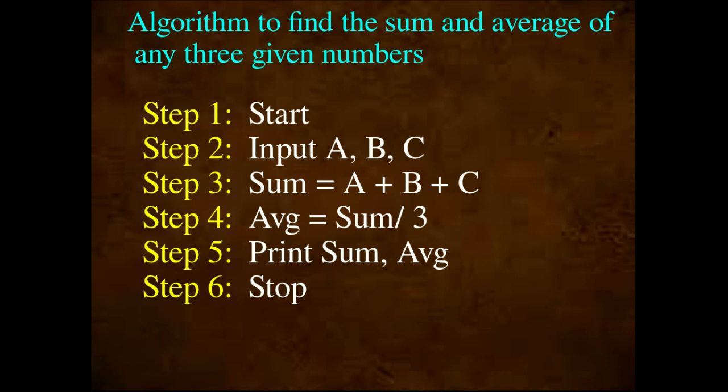Step 4 is average. Average is sum divided by the total number. If the total number is 3, then: Step 4: Average is equal to Sum divided by 3. Now we have to find the sum and average. Step 5: Print Sum, Average. Step 6: Stop. The starting step begins the algorithm and the ending step concludes it.